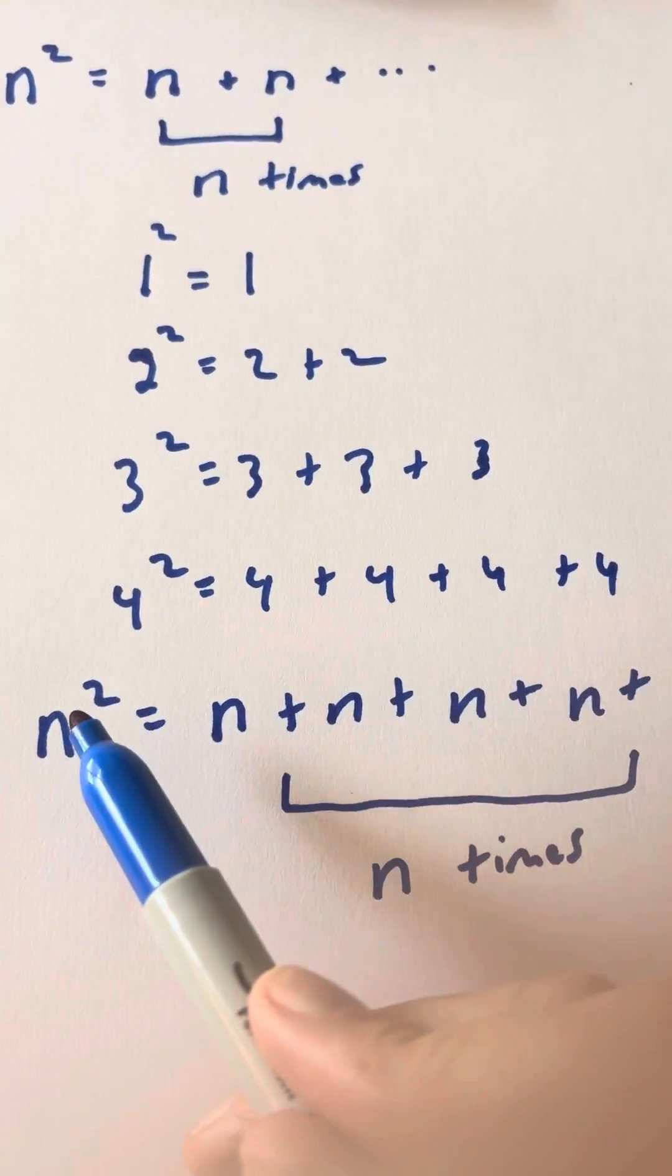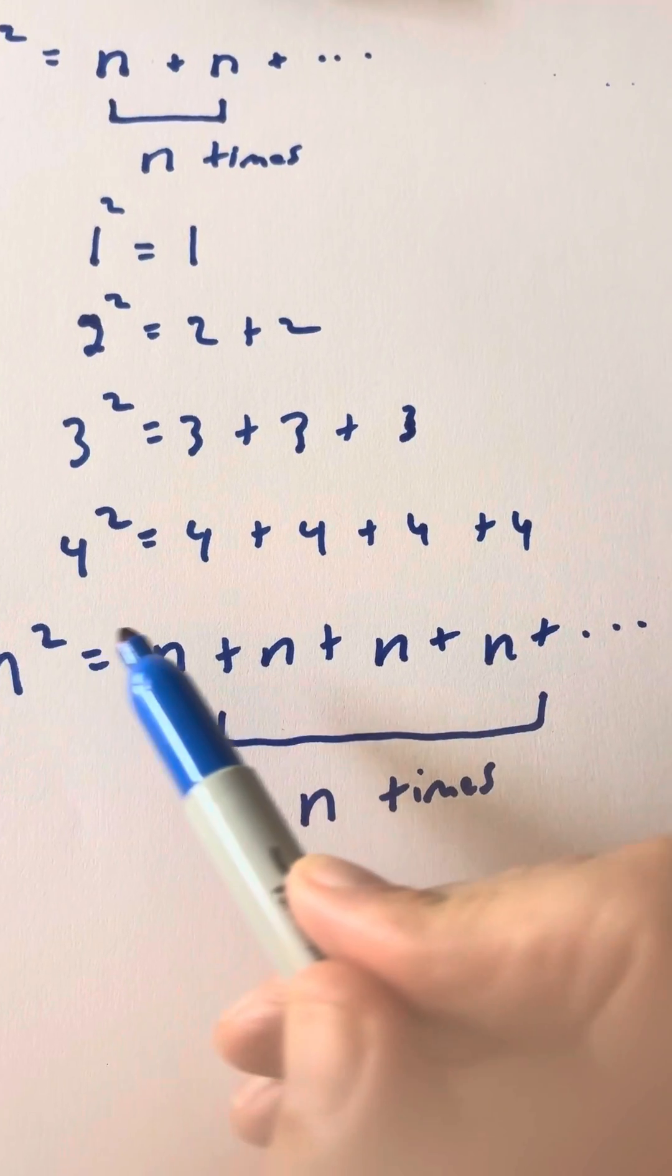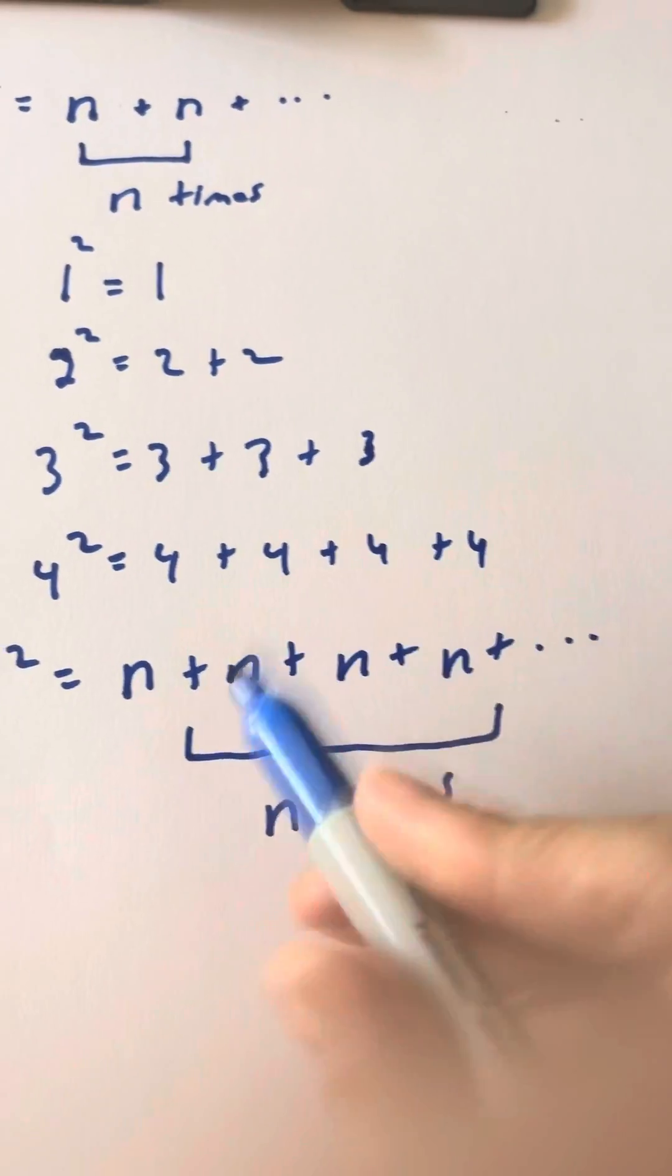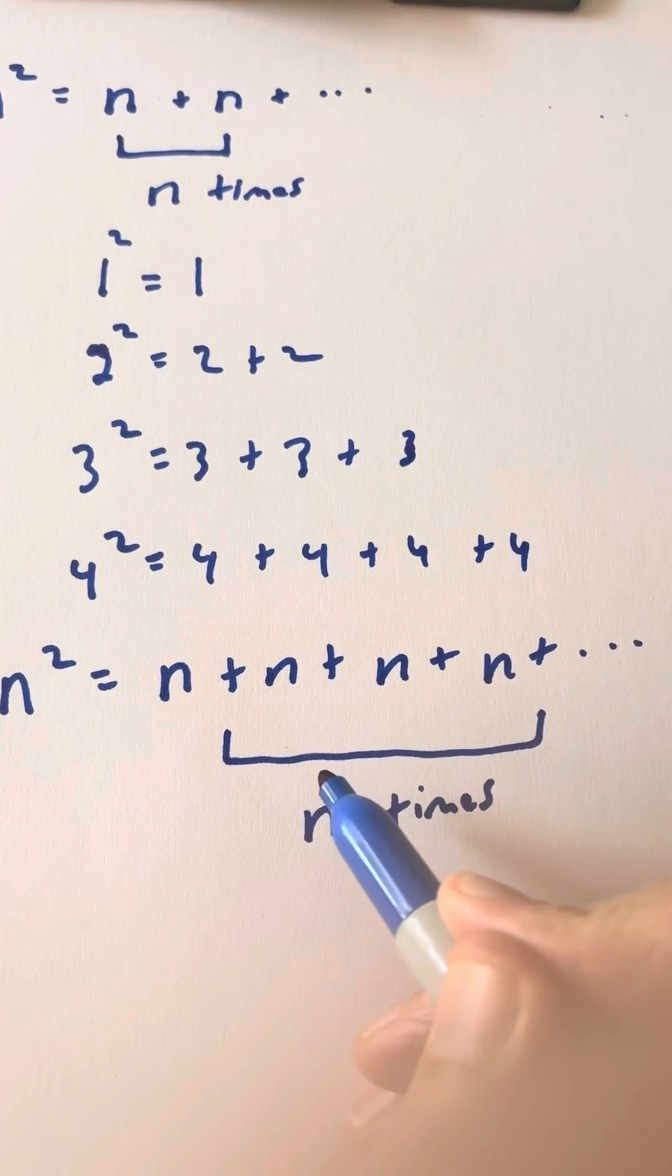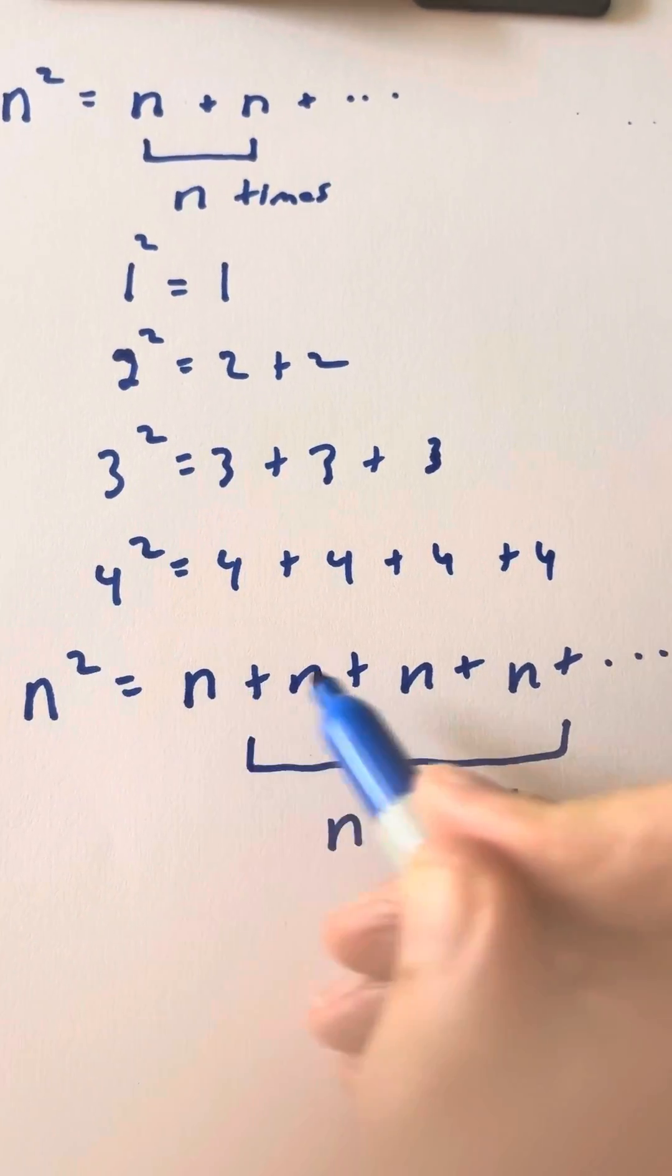So you can see that the way the pattern works is that when you have n squared, it's n plus n plus n plus n, and you do that for a total of n times. And that's the equation we're going to work with.